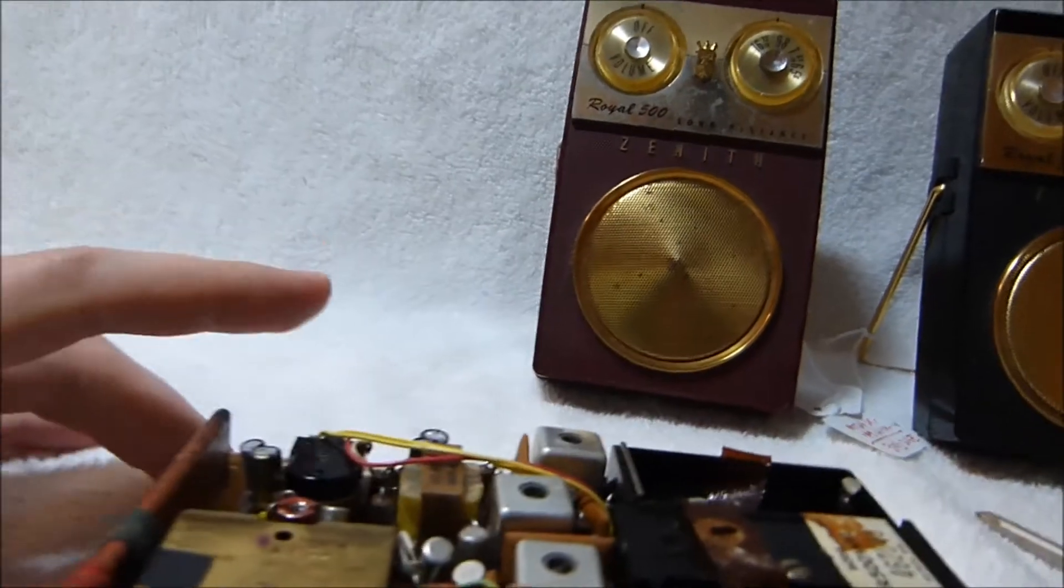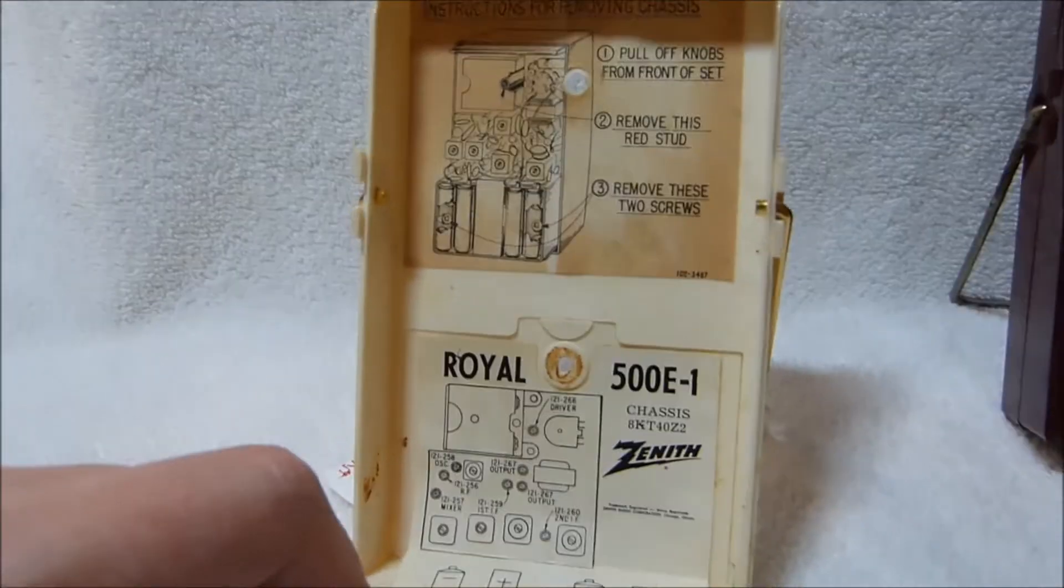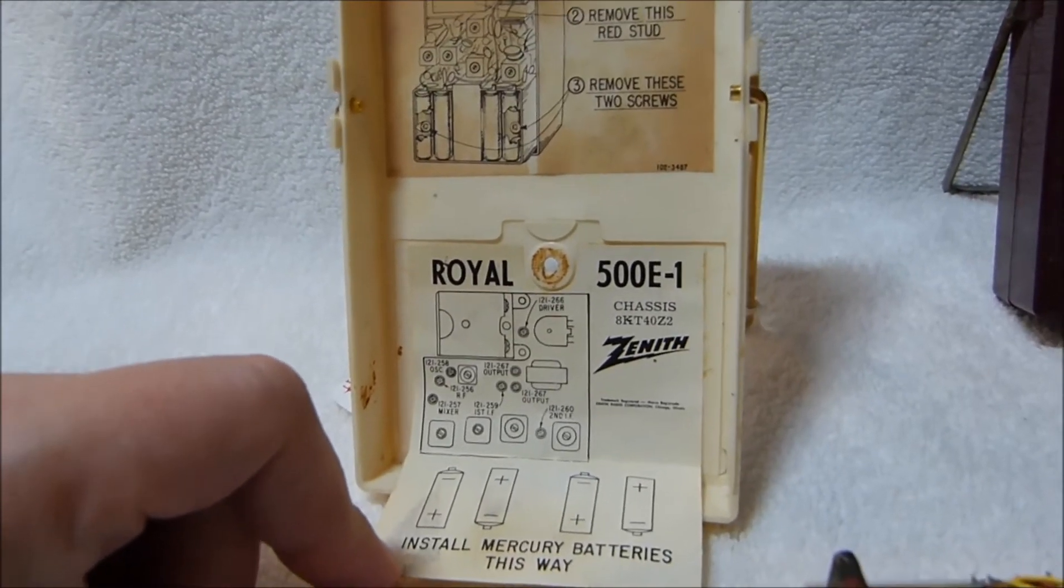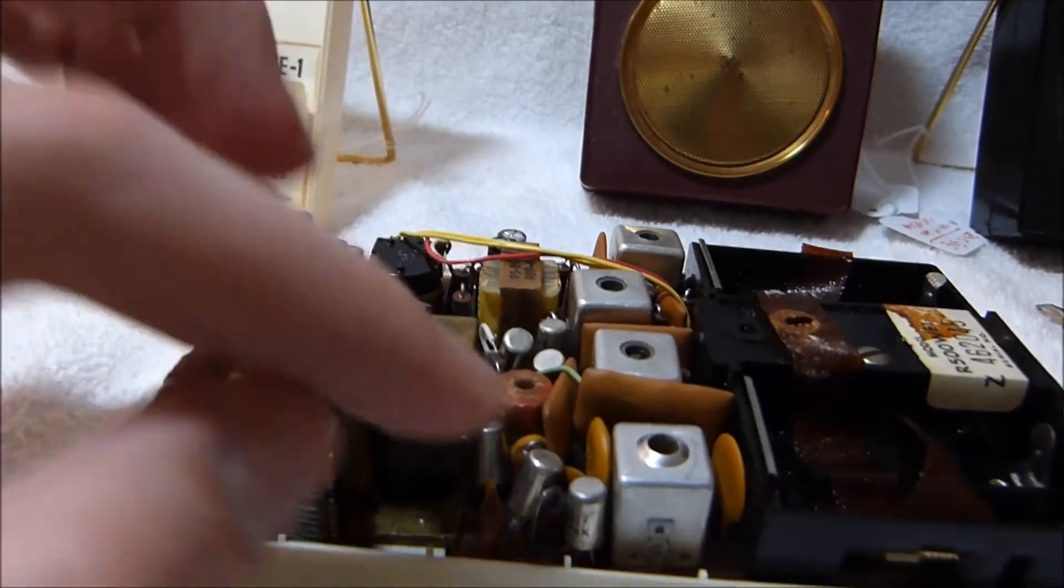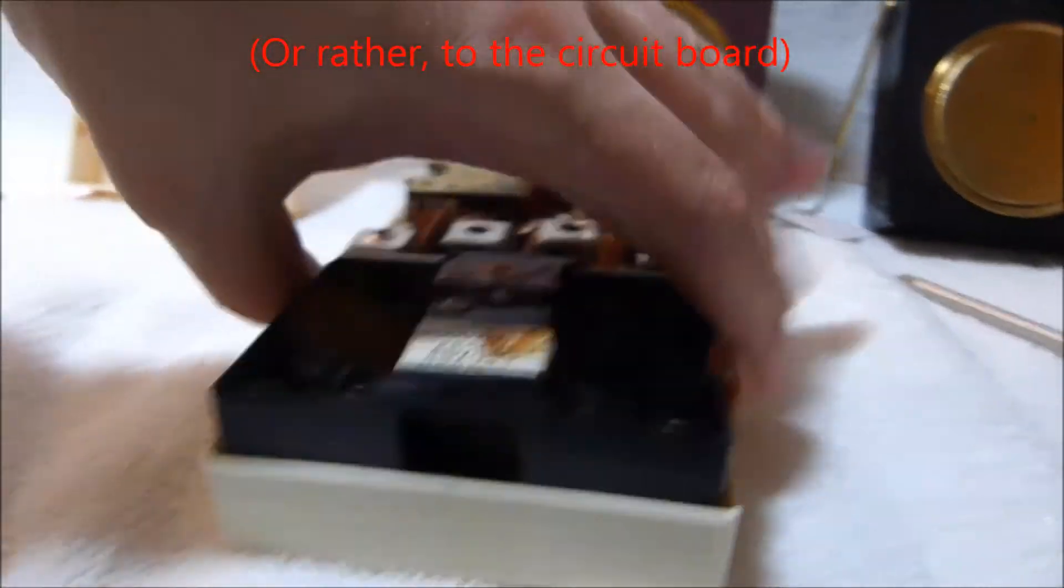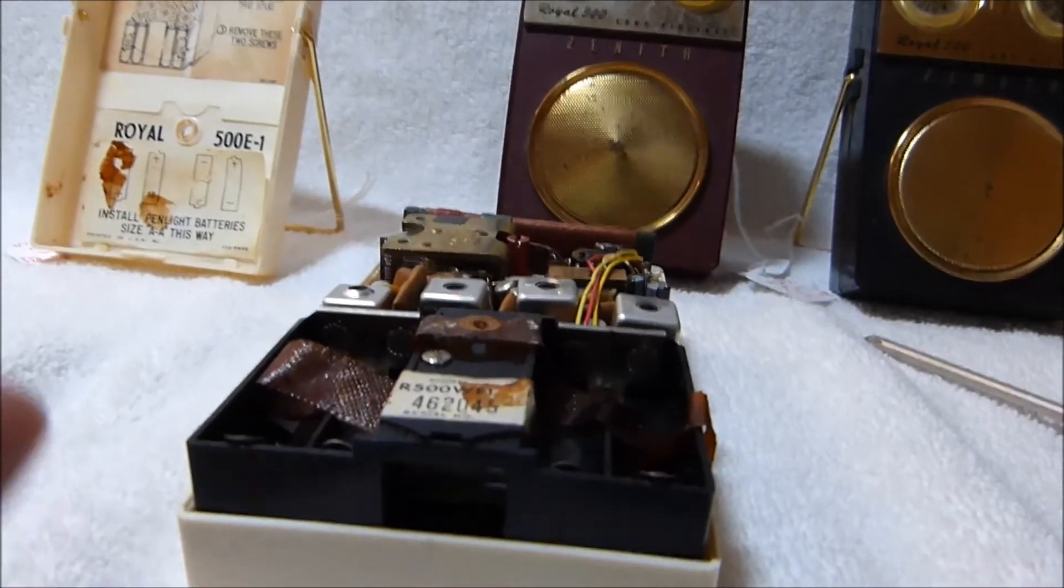Anyway, as I said earlier, the 500 E1 was a production cost reduced version of the 500 E. You can see it's got transistors that are just soldered right to the chassis. And the output transformer that was here is gone.